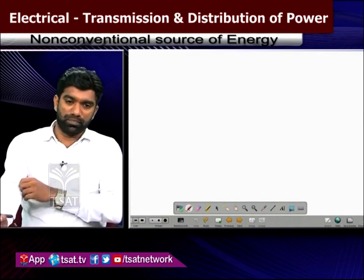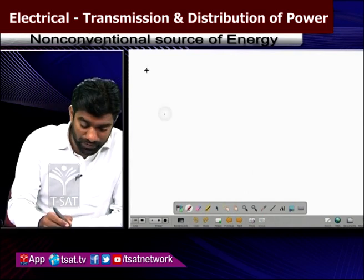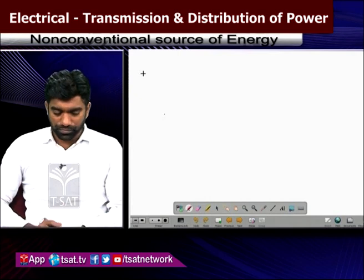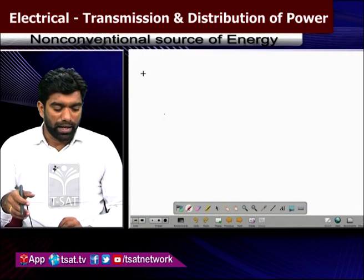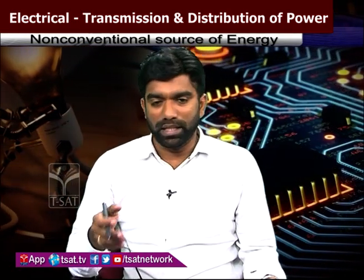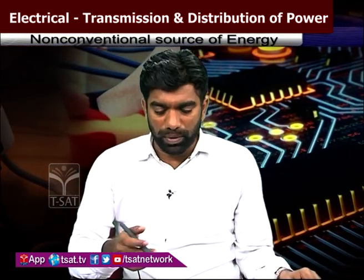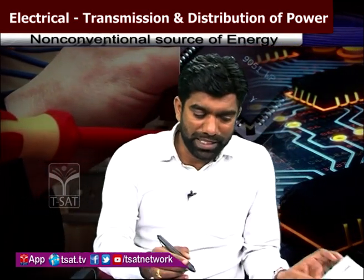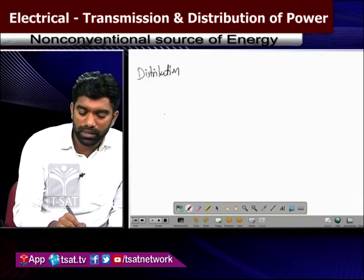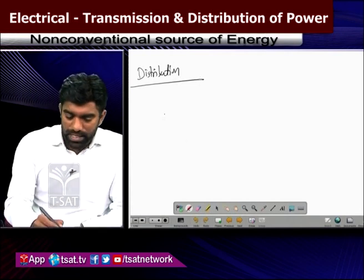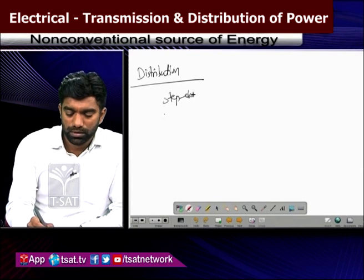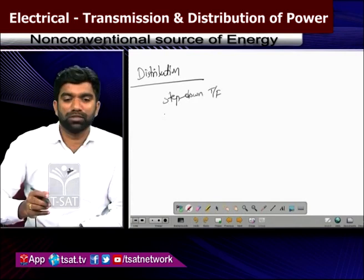Transmission systems can be classified further by conductor type, transmission line type, size of conductor, and corona effect — covering both primary and secondary transmission. Coming to distribution of power, we use step-down transformers.